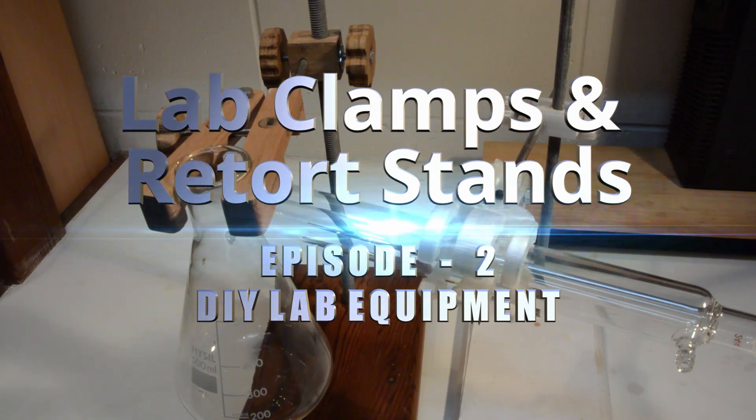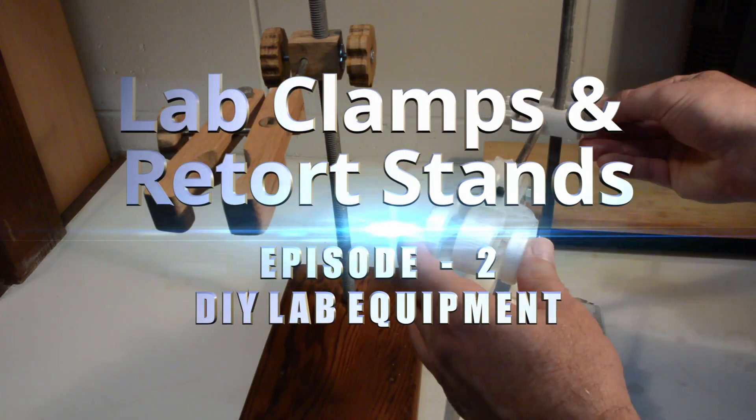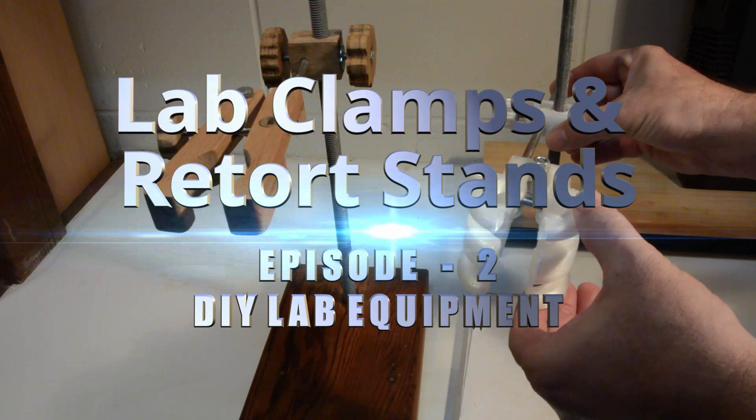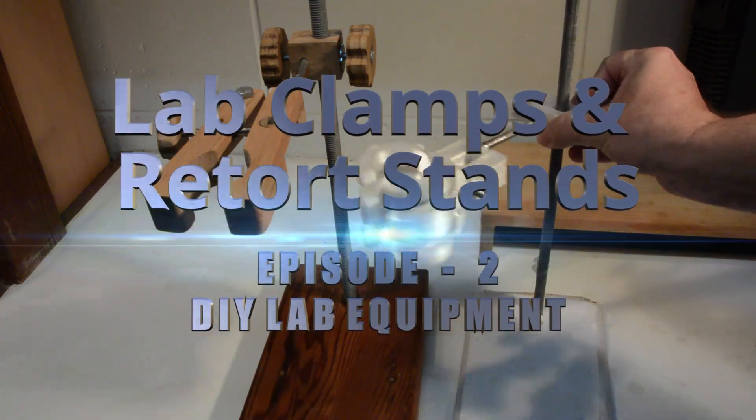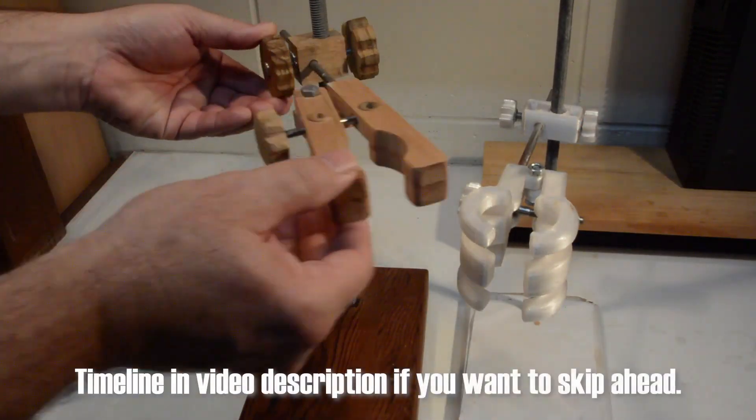Welcome to Episode 2 of a series about DIY equipment for Home Chemistry Labs, which is designing and making retort stands with boss heads and clamps, including both 3D printed and wooden versions.